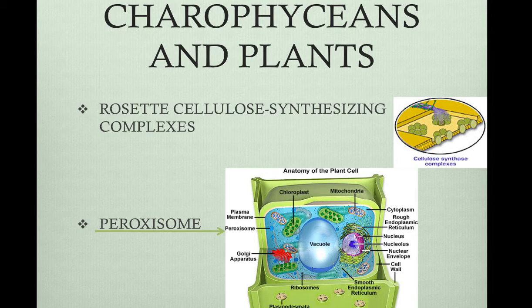Rosette cellulose synthesizing complexes are found in the cell membrane, and they have rose-shaped arrays of proteins that produce cellulose microfibrils of the cell wall. Other types of photosynthetic organisms have linear arrays of proteins that produce cellulose. Peroxisomes are a microbody that contains enzymes that transfer hydrogen from various substrates to oxygen, producing and then degrading hydrogen peroxide. Peroxisomes are closely associated with chloroplasts. Charophyceans and land plants have the same enzymes in their peroxisomes, which makes them homologous structures.